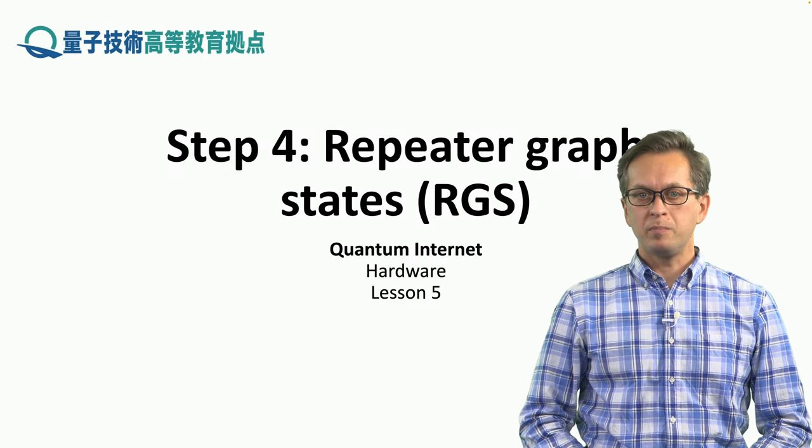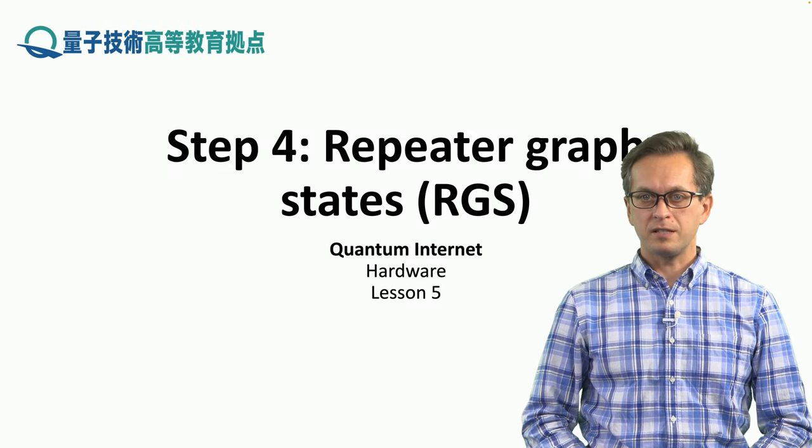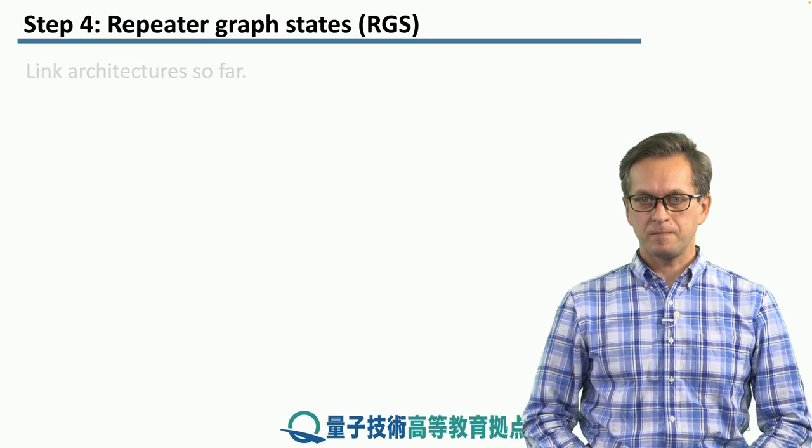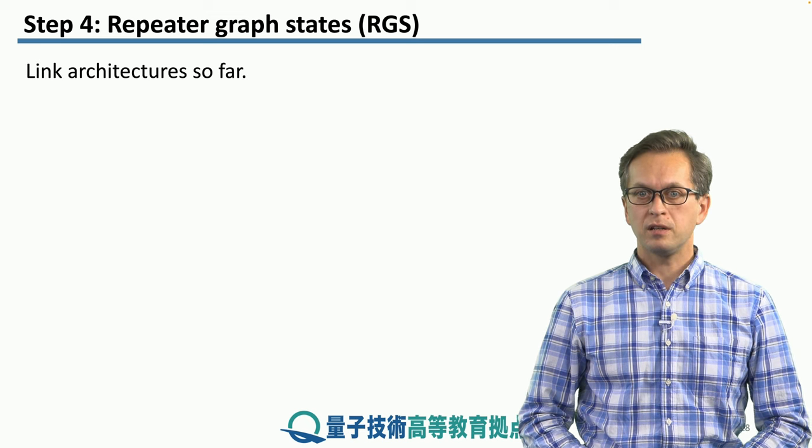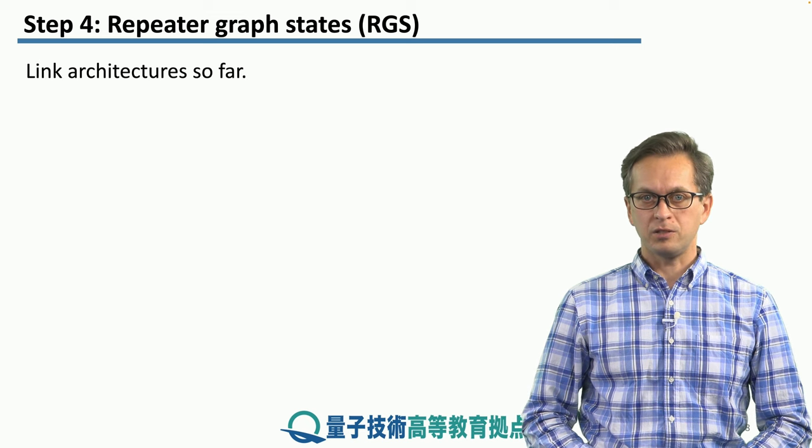Step four: Repeater Graph States, RGS. This is our fourth link architecture.